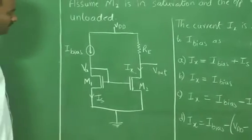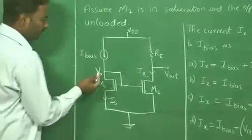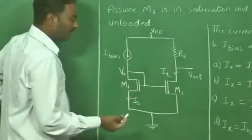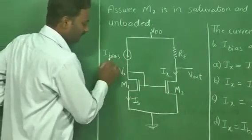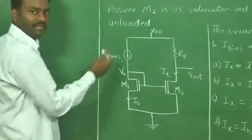It can be readily realized that this is a current mirror circuit which replicates the current in one branch to the other branch. So it can be established that I_bias equals Ix. But let us analyze from the given information.